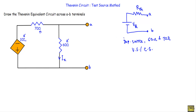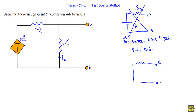When the circuit contains only dependent sources and resistors, the Thevenin equivalent circuit of the network will not be a voltage source in series with Rth. Rather, the Thevenin equivalent circuit of the given network will be a single resistor Rth connected between the A and B terminals. There will not be any voltage or current source involved in the equivalent circuit.